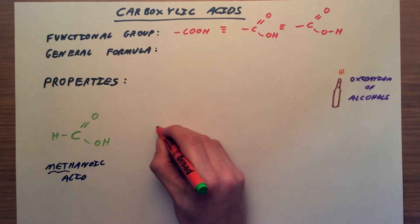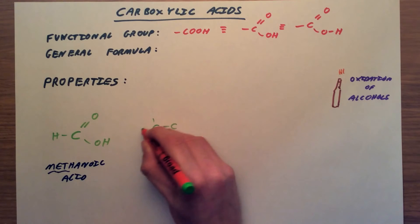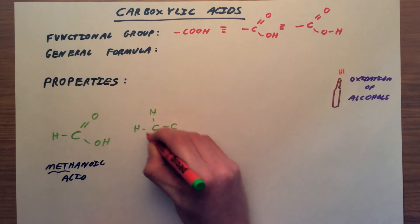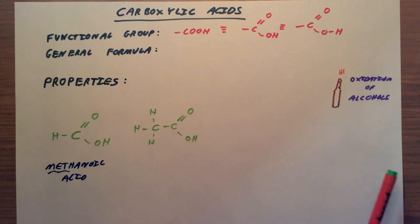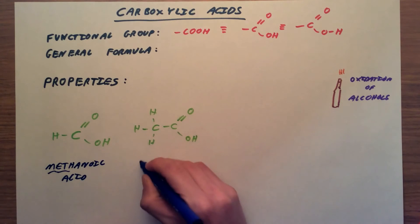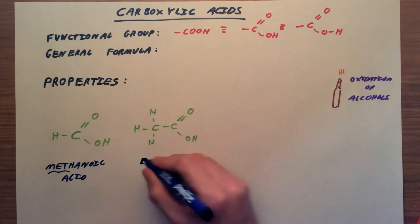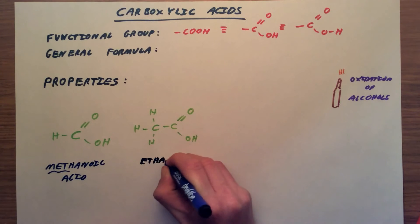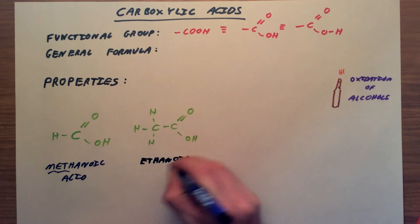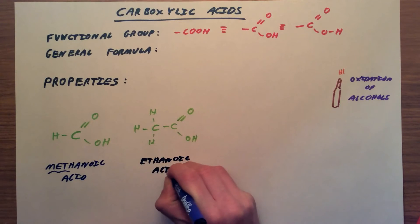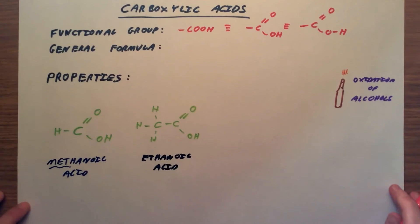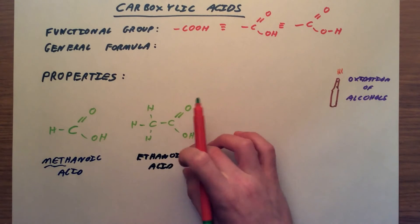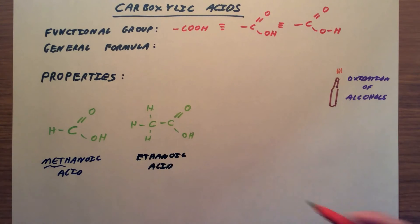The second carboxylic acid follows exactly the same principles. This time we're going to have a carbon chain containing two carbon atoms, and on our second carbon atom we have our carboxylic acid functional group. This one is going to be ethanoic acid, also known as acetic acid in old money. Ethanoic acid is the proper, official name for it now.